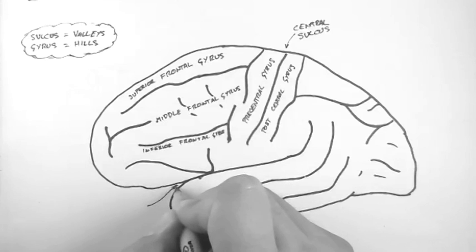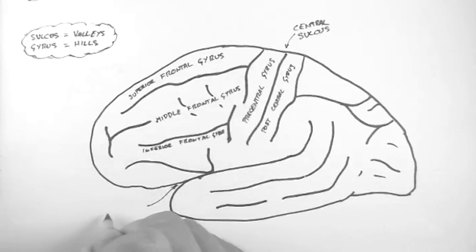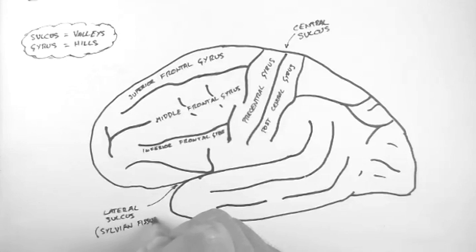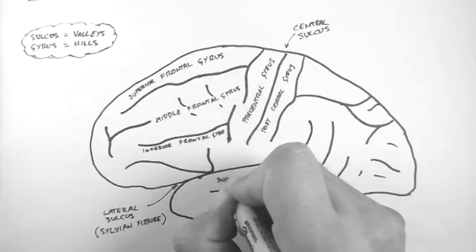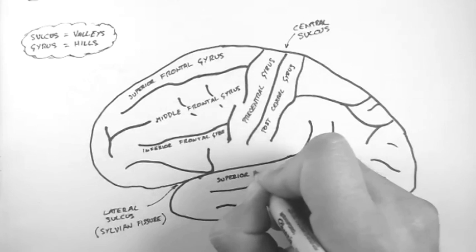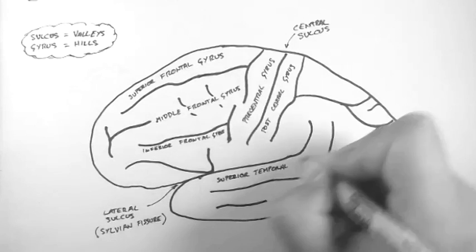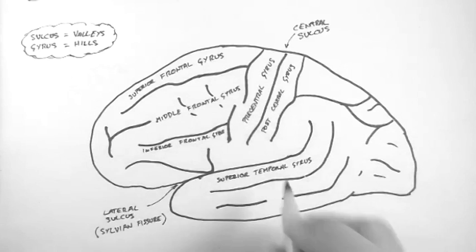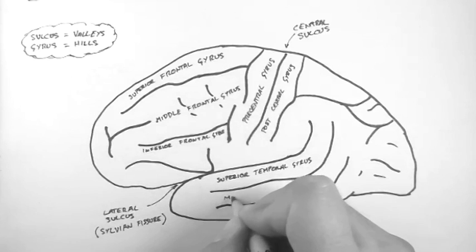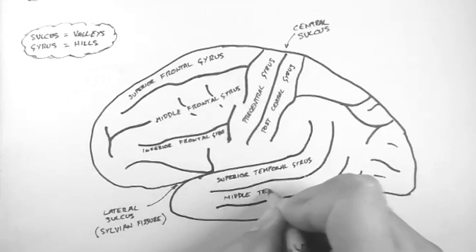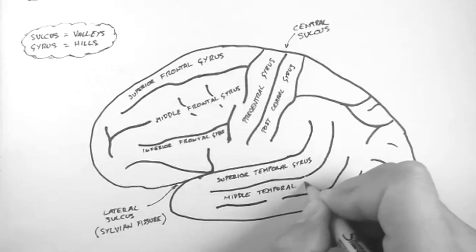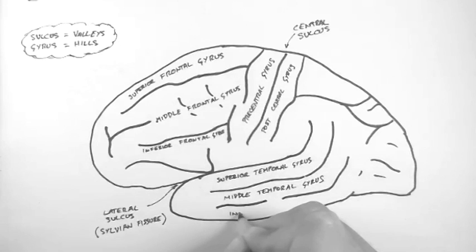Now this big line here separates the temporal lobe from the rest of the brain, and we call this the lateral sulcus, also known as the sylvian fissure. Here is the superior temporal gyrus. Below it is the middle temporal gyrus. And below that is the inferior temporal gyrus.